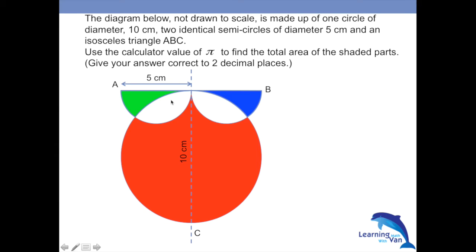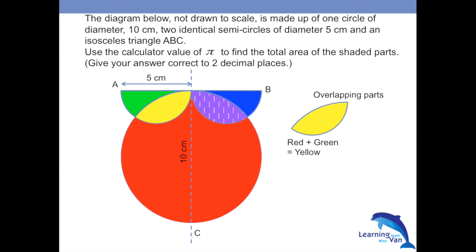Take note of what happens to these overlapping parts. Red plus green gives you yellow — so you have this yellow portion here. And red plus blue gives you purple — this overlapping purple area. These two are actually double layers stacked on top of each other, giving you an extra area.